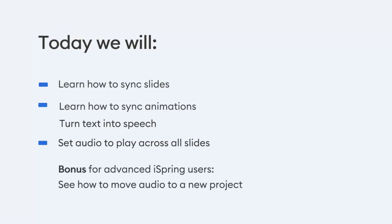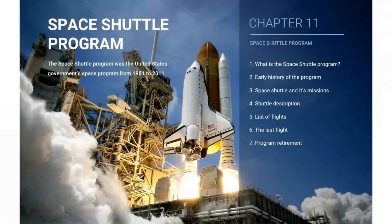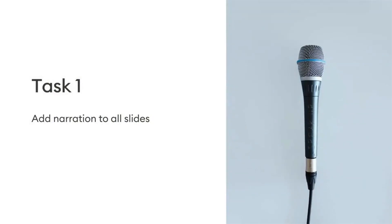As a bonus for advanced iSprint users, we will show you how to move audio from one project to another. After the session, you will have two consistent ways of working with audio in PowerPoint and iSprint. We are going to work on a course about the history of the Space Shuttle program. I've already put together all the slides, but there is one thing missing — audio narration. Our first task will be adding narration to all slides. We already have an audio track recorded by a professional voice artist, so we will use that for our presentation. To match slides and the narrator's speech, we will have to listen to the audio first and define how much time it takes to narrate each slide. I've already done that in advance, so we will be able to look at the timings we need to set up for each slide.